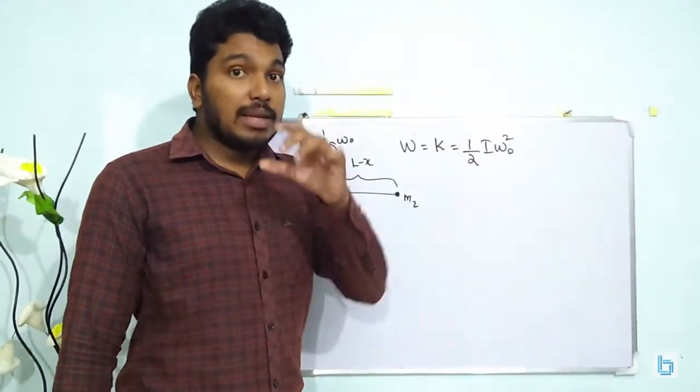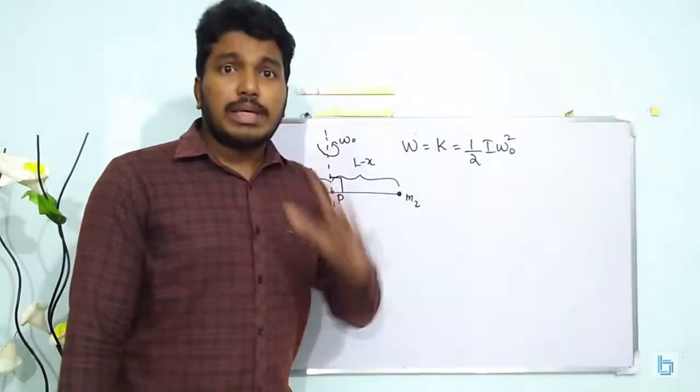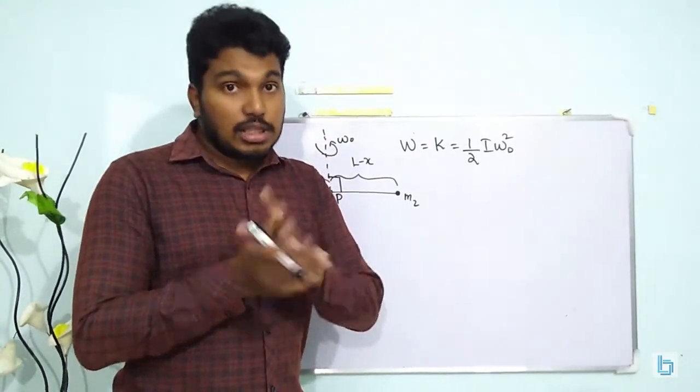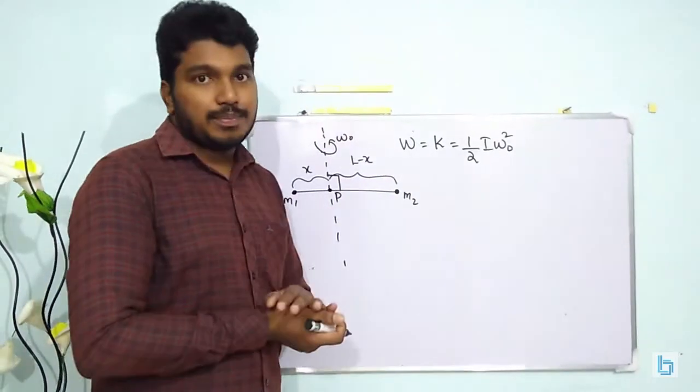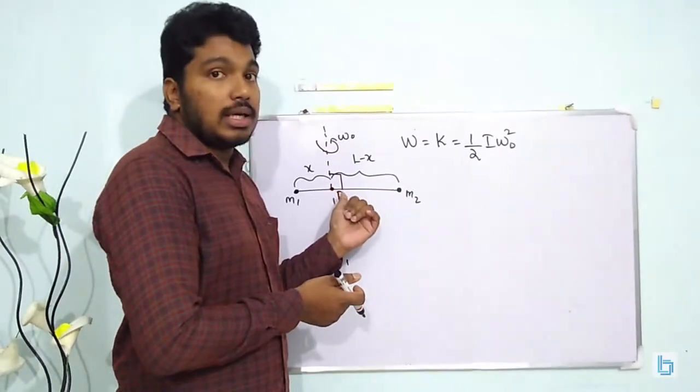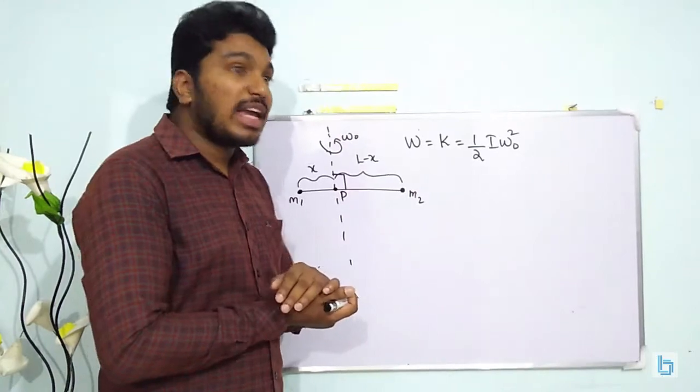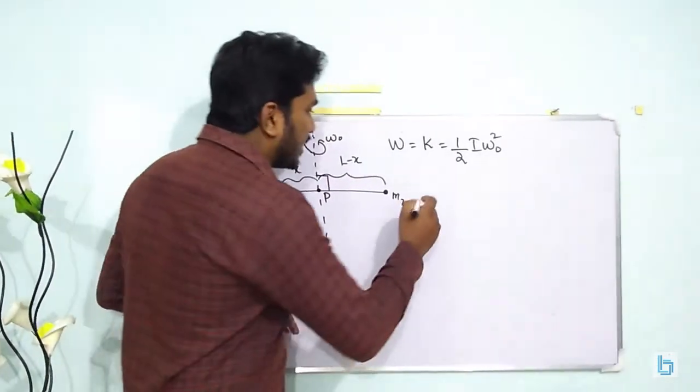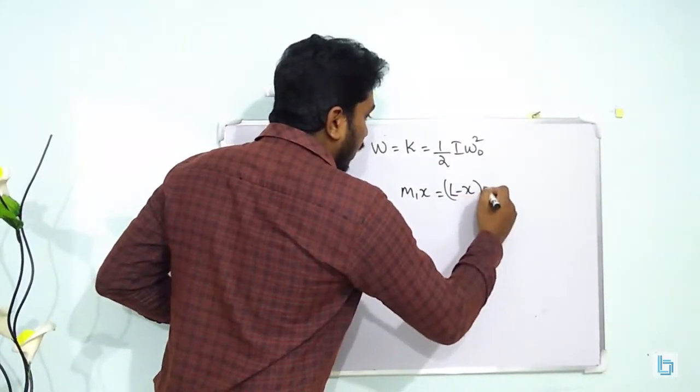The moment of inertia is minimum about the center of mass of the system. Therefore we can find the point P by equating the moments. So we can write M₁x = M₂(L - x).